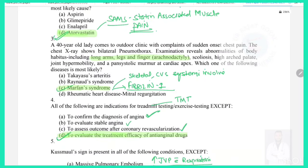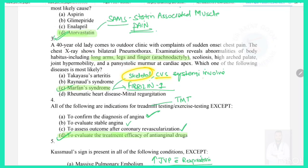Question 3: A 40-year-old lady presents with sudden onset chest pain; chest X-ray shows bilateral pneumothorax; examination reveals abnormality of body habitus including long arms, legs, and fingers. The hint of long arms, legs, and fingers directly points to Marfan syndrome. In Marfan syndrome there is a defect in fibrillin-1, leading to skeletal, cardiovascular, and systemic involvement.